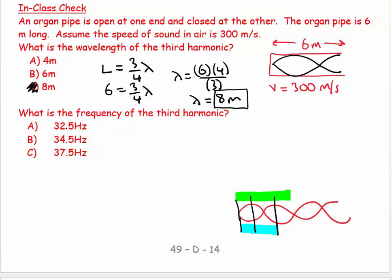And then if I want to know the frequency of the third harmonic, I say V is equal to F lambda. F is equal to V over lambda. F third harmonic is equal to 300 over 8. F is equal to, well, 3 eighths of 24 carries 6, 5 eighths of 40, 6 eighths of 48, 7 eighths of 56, 0.5, 37.5 hertz.